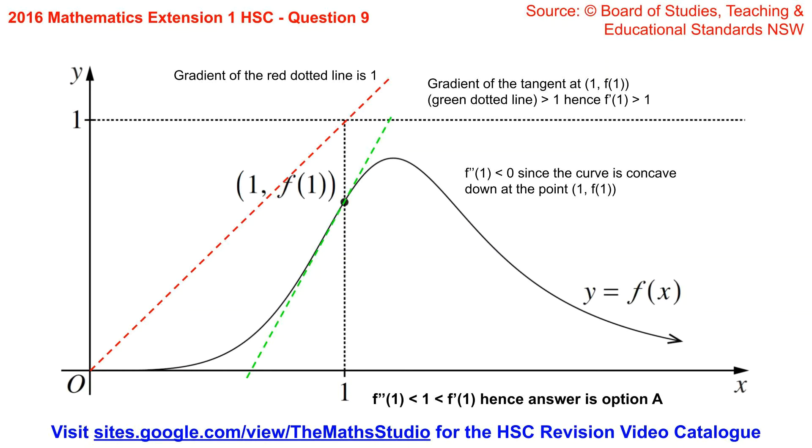Now the point (1, f(1)) is at a point on the curve where it is concave down. Hence the second derivative f''(1) is less than 0.